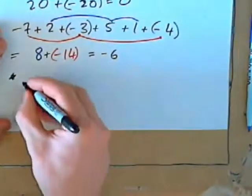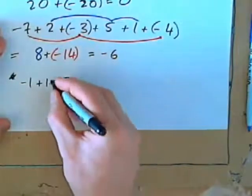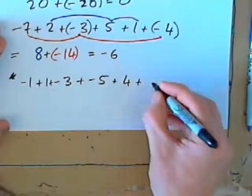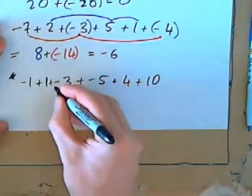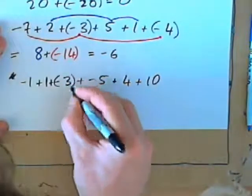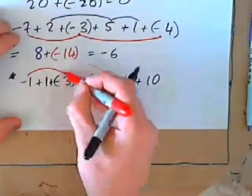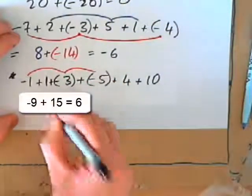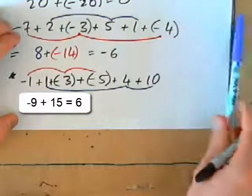I'll just do one more of those for fun. If you had negative 1 plus 1, minus 3, or sorry, plus negative 3, plus negative 5, plus 4, plus 10. And then, how much money is that? And we'll then close the negatives so we can see the negative signs. Again, we can put the negatives together. Negative 1, negative 3, that's negative 4. And negative 5, that makes negative 9. Negative 9, positive 1, and 4 is 15. And 10, that makes negative 9, plus 10.